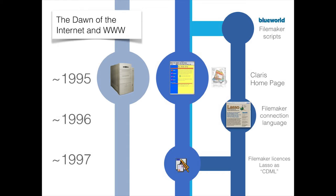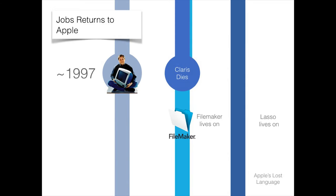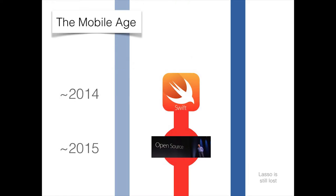A company called Blue World started a language called Lasso — it's like Swahili, very few people have heard of it. Apple took all of that intelligence and licensed it, shoved it into Claris, and it became Claris Dynamic Markup Language — the first server-side Mac language. Then Jobs came back to Apple and killed most products. Claris was renamed FileMaker and still exists, but Lasso kept going and there's a huge community of Lasso developers. It's sort of like PHP.